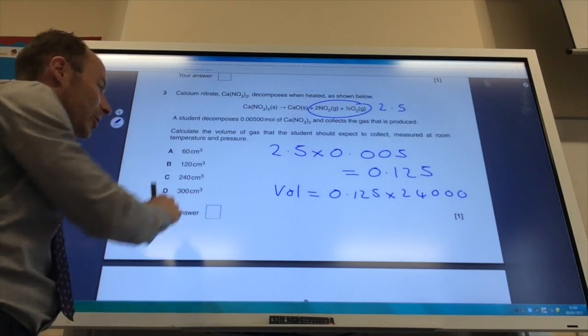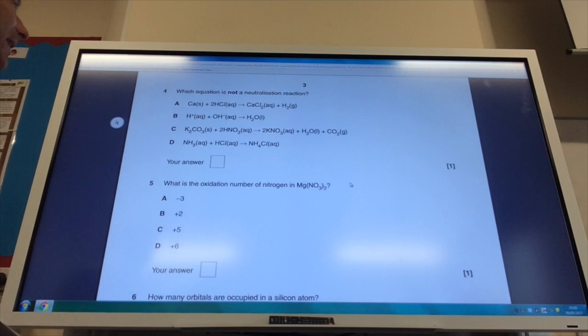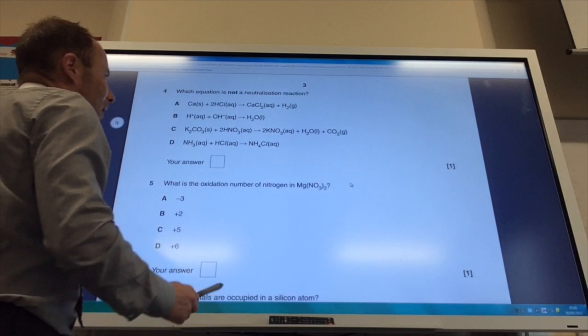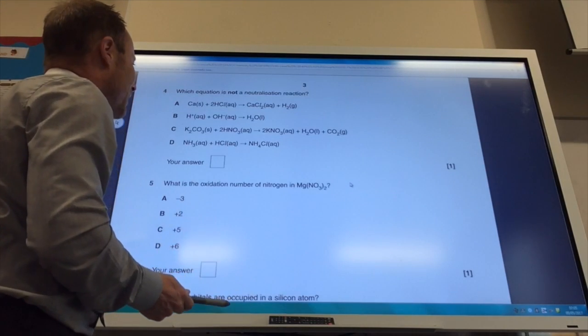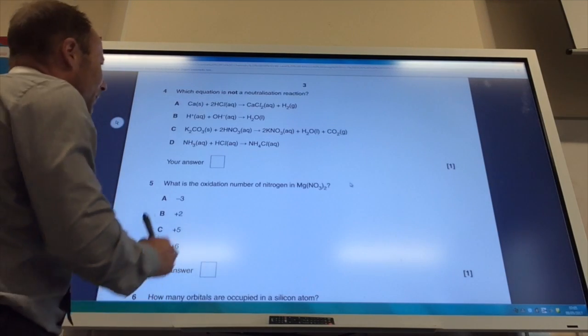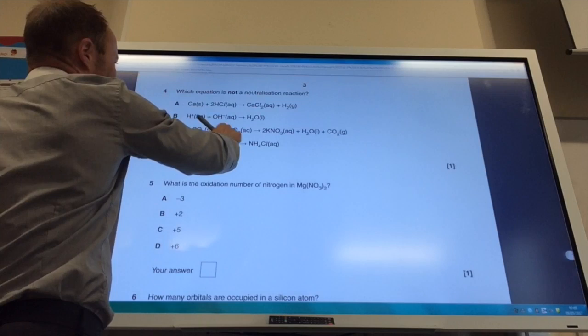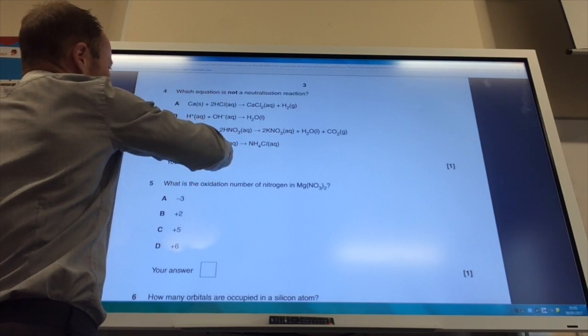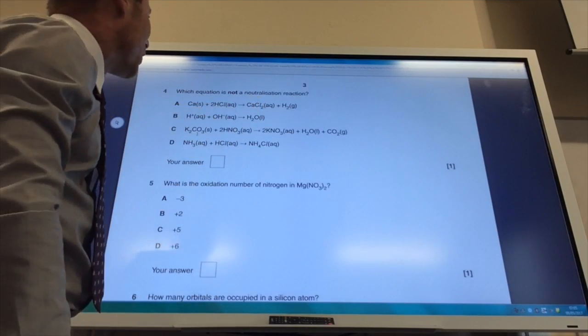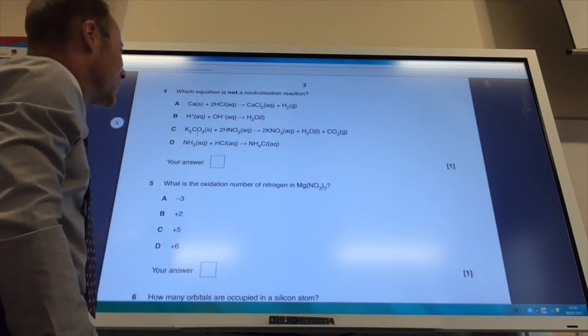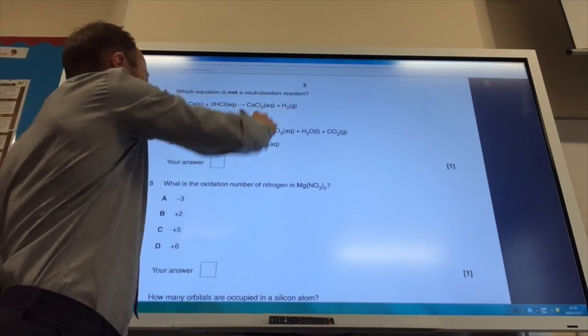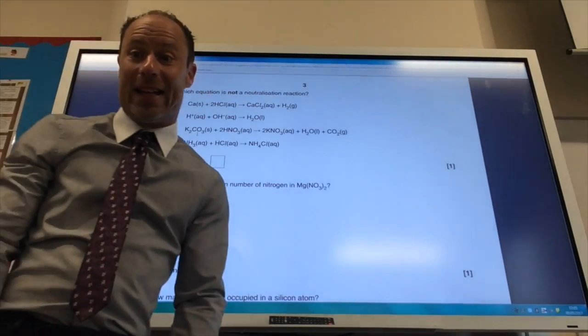Which of these equations is not a neutralization reaction? In neutralization, remember it's an acid plus a base, acid plus a carbonate. That's acid, that's base, that's carbonate, that's acid and ammonia is a base, hydrochloric acid is of course an acid. A is a redox reaction because calcium is changing oxidation state from 0 to 2 plus, and hydrogen is changing oxidation state from plus 1 to 0. So the answer is A.